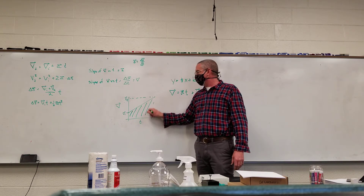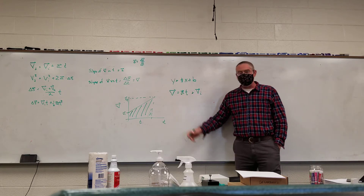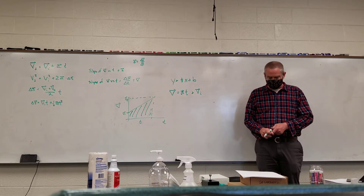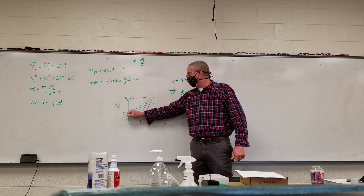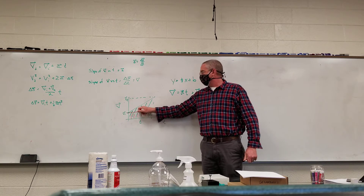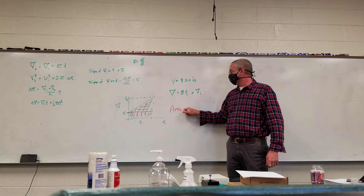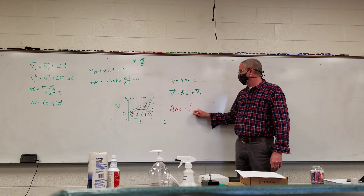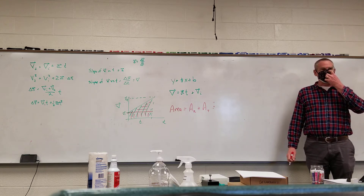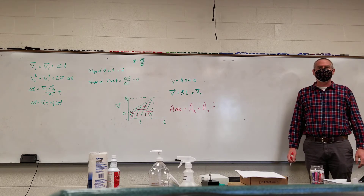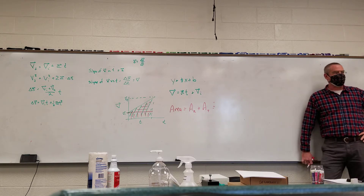Now let's take a look at the area underneath that line. I basically have a trapezoid, so I'll break it up into a rectangle and a triangle. The total area equals the area of the rectangle plus the area of the triangle.